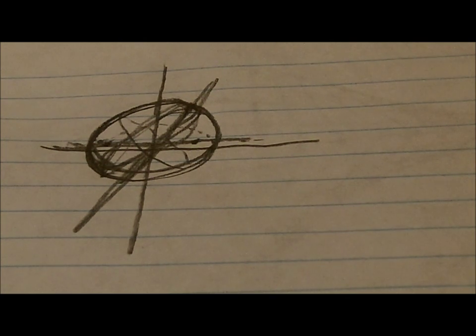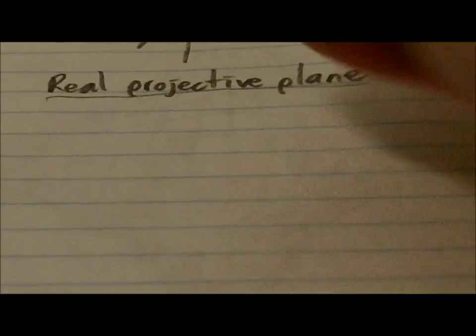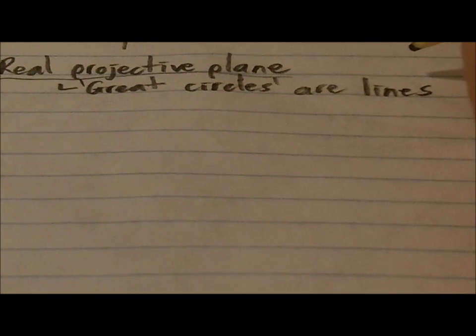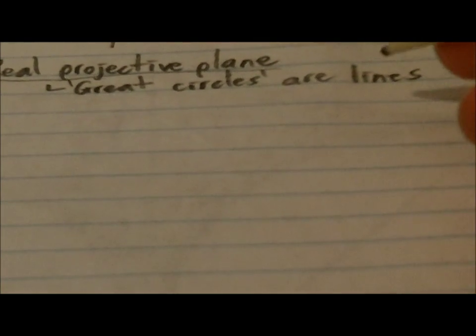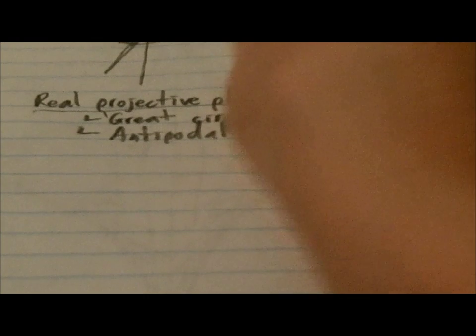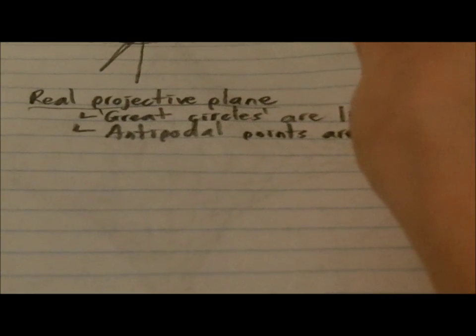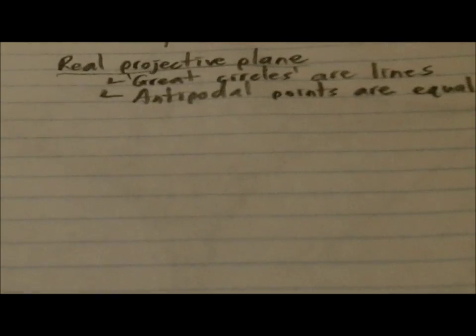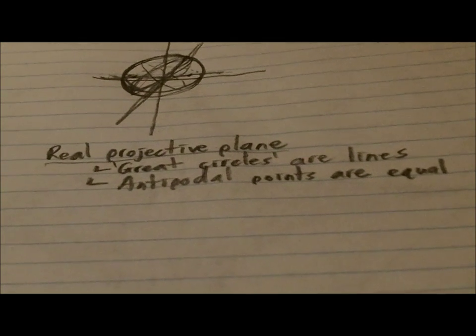So, with these axioms that we've created, we actually have what is called the real projective plane. So, we have the factors that make this the real projective plane, and we'll get to describing this projective plane later. The great circles are the lines on the surface of this globe or sphere that we have. And in addition, we know that antipodal points are saying they're equal. They're considered the same.